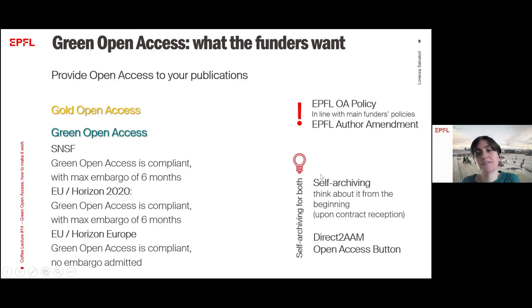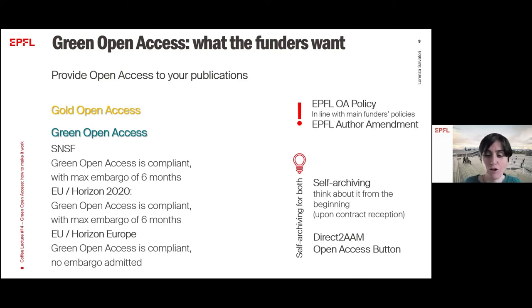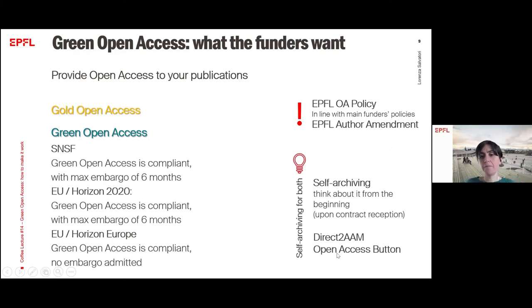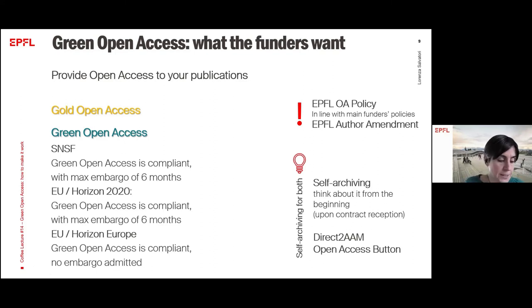Self-archiving is very important and it's crucial to think about it from the beginning — even upon contract reception — because researchers often lose the accepted version of their article along the way, and then it's quite hard to retrieve it. That's why I'd like to mention an interesting tool called 'Direct to AAM,' powered by the Open Access Button. It's a set of easy guides to help authors obtain and retrieve the accepted version of their manuscript directly from the journal submission system, with simple instructions for each publisher.